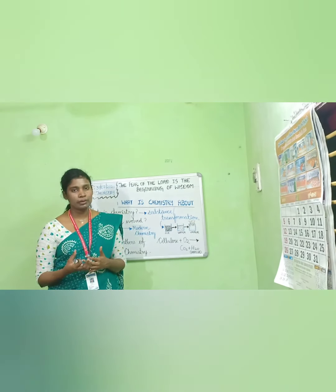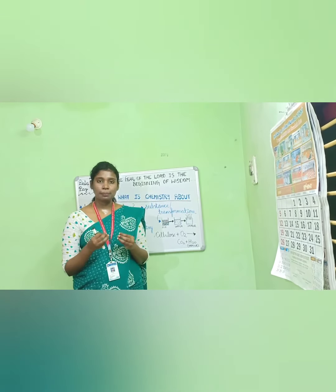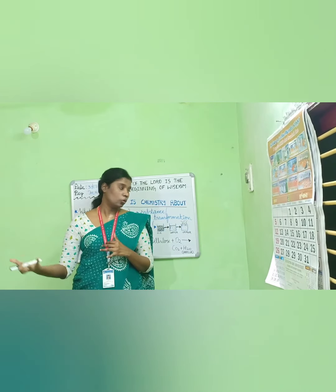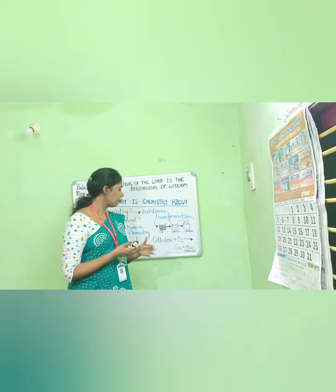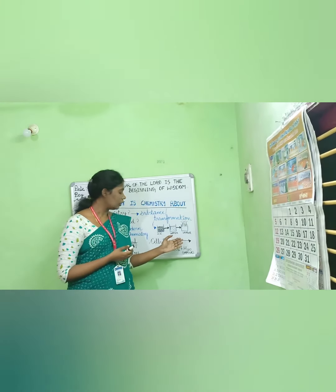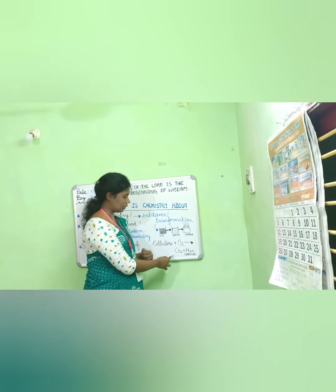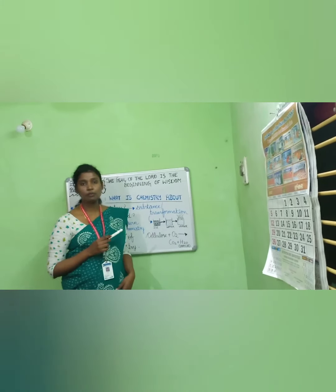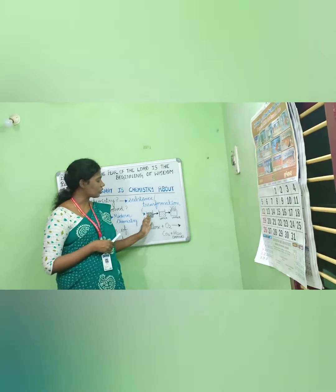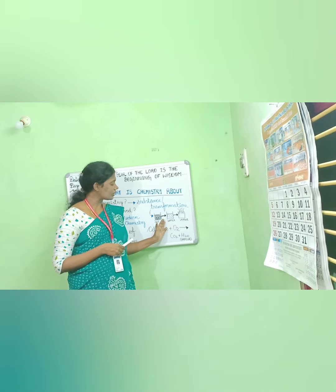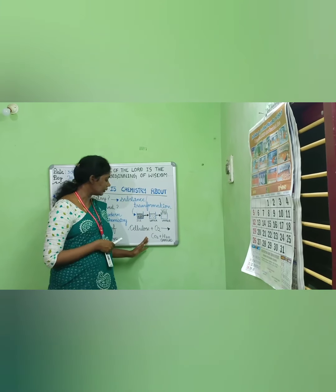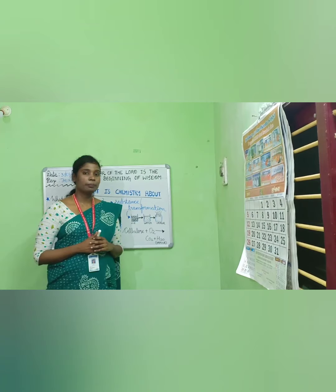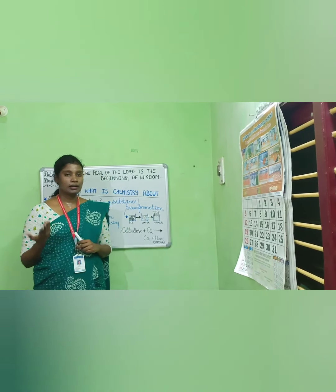In a chemical change, a change happens in the substance. The common example is burning. When we burn paper or wood, the paper and wood are made up of a substance called cellulose. The cellulose combines with oxygen from the air to form carbon dioxide and water. So in a chemical change, new substances are formed, whereas in a physical change, no new substances are formed. Similarly, when we burn sulfur or carbon, carbon dioxide is produced.